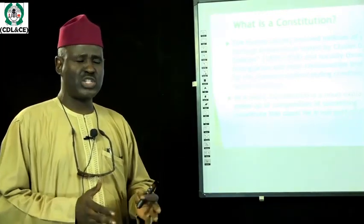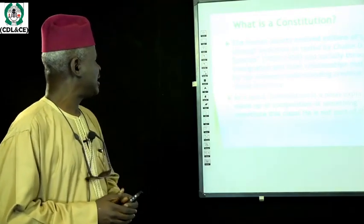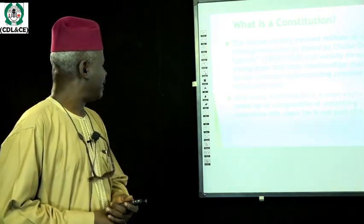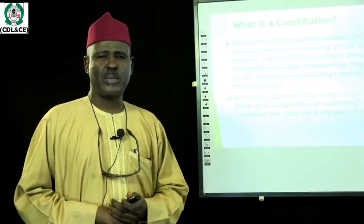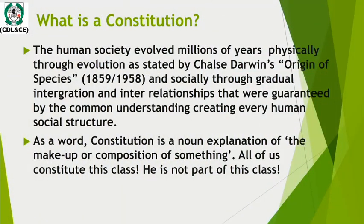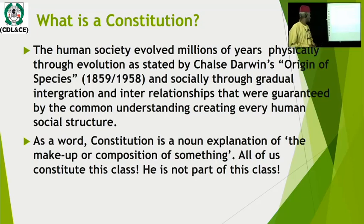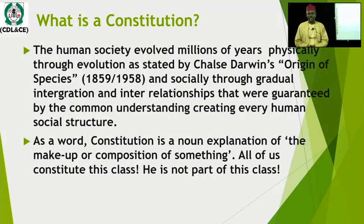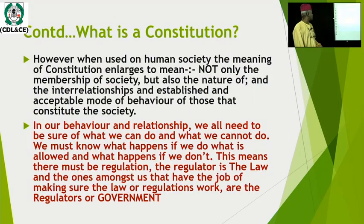Moral changes, integration changes, and many other understandings between human beings have created different social structures. The constitution became necessary over time to monitor and regulate these social structures and the relationships between the people within them. As an English word, the constitution is a noun that explains makeup — what constitutes what, how many things come together to form a unit. When you say a constitution, you're talking about things that have come together to compose and form a unit.